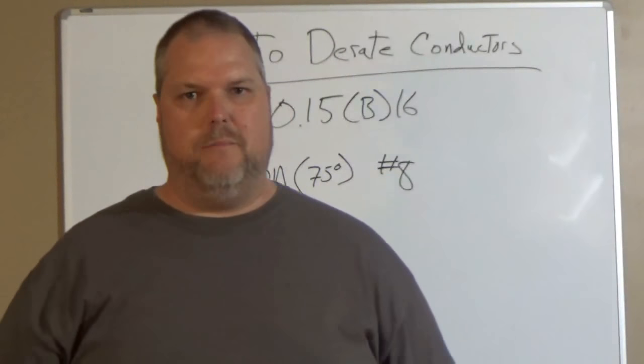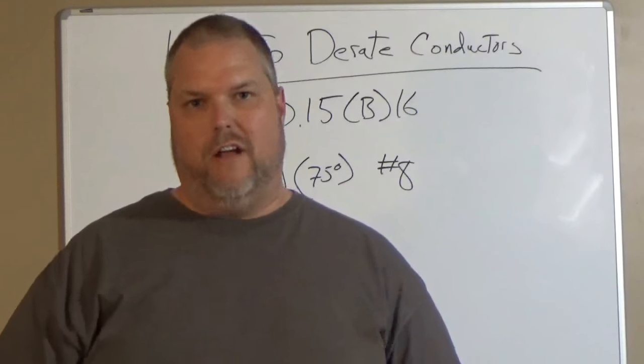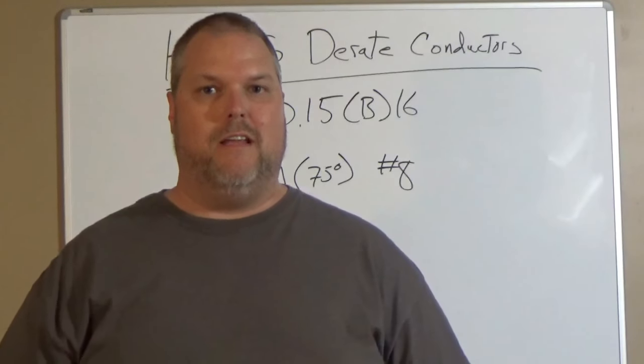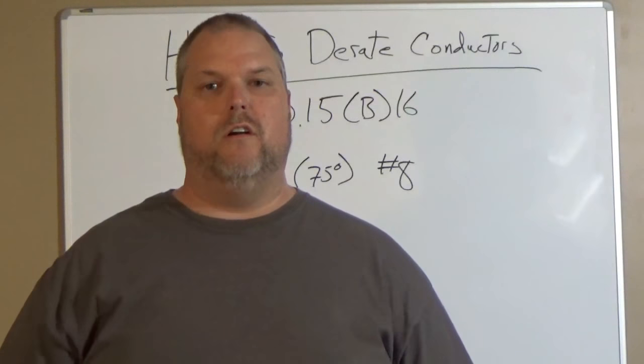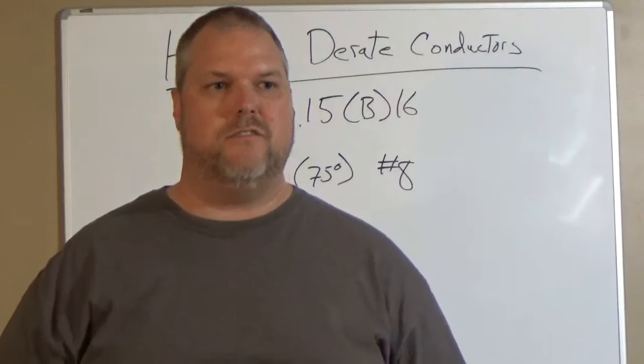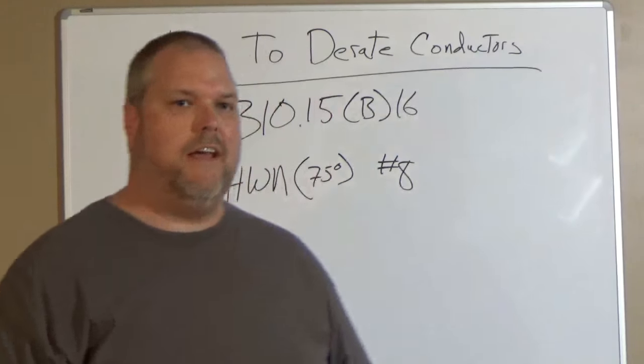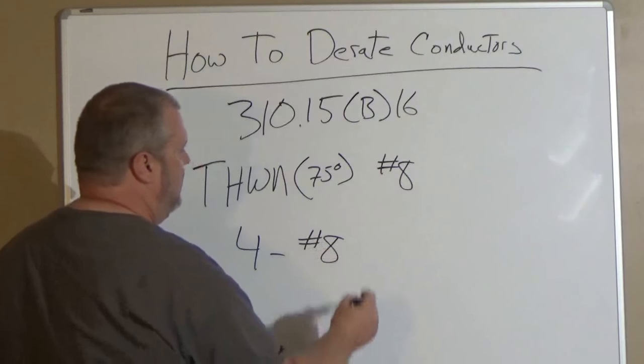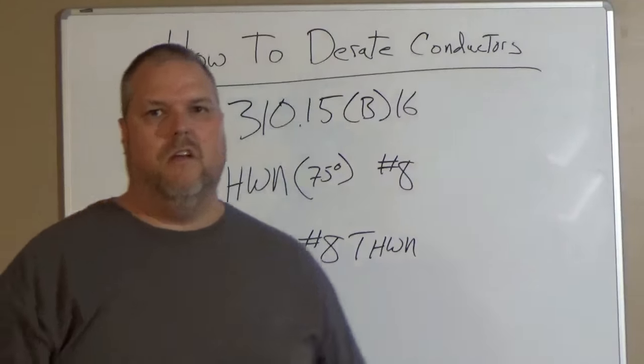Now insulation type is important. You have to understand whatever type insulation you're installing, your amperages are going to change a little bit. So make sure you understand the difference between THHN and THWN and what they're used for. Maybe we'll explain this in another video—always love new ideas. So let's look at this. If I have four conductors in a conduit, so I'm taking four number 8 THWN wires.